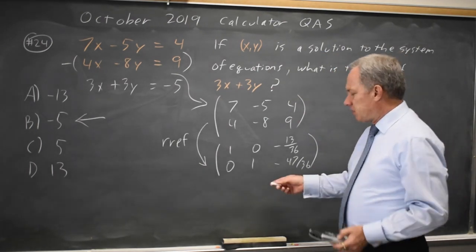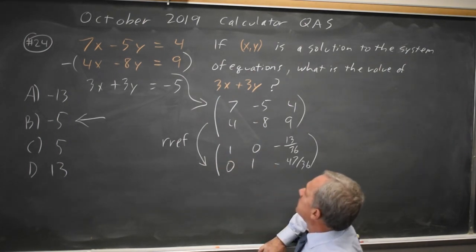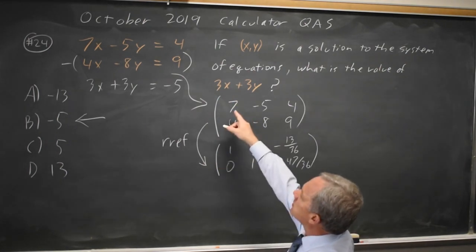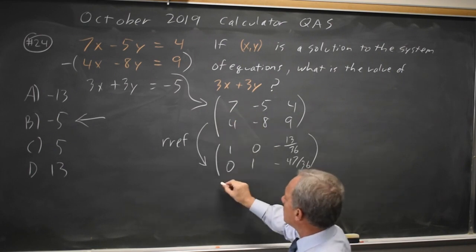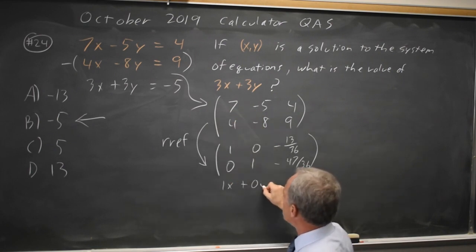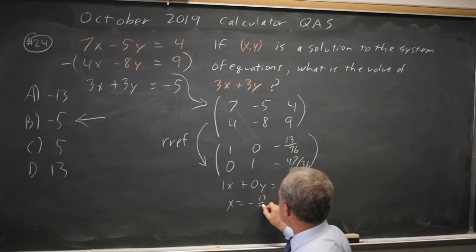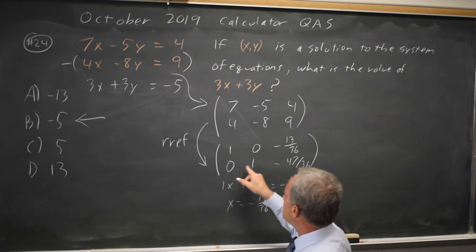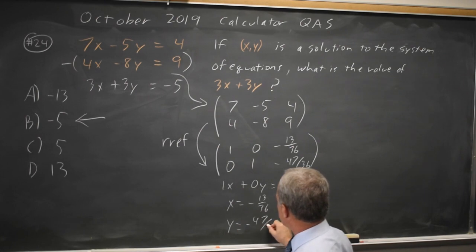So let's rewrite this as a system of equations. Since the 7, negative 5 came from 7x minus 5y, this is equivalent to 1x plus 0y equals negative 13 over 36, which is just x equals negative 13 over 36. And similarly, 0x plus 1y is just y equals negative 47 over 36.